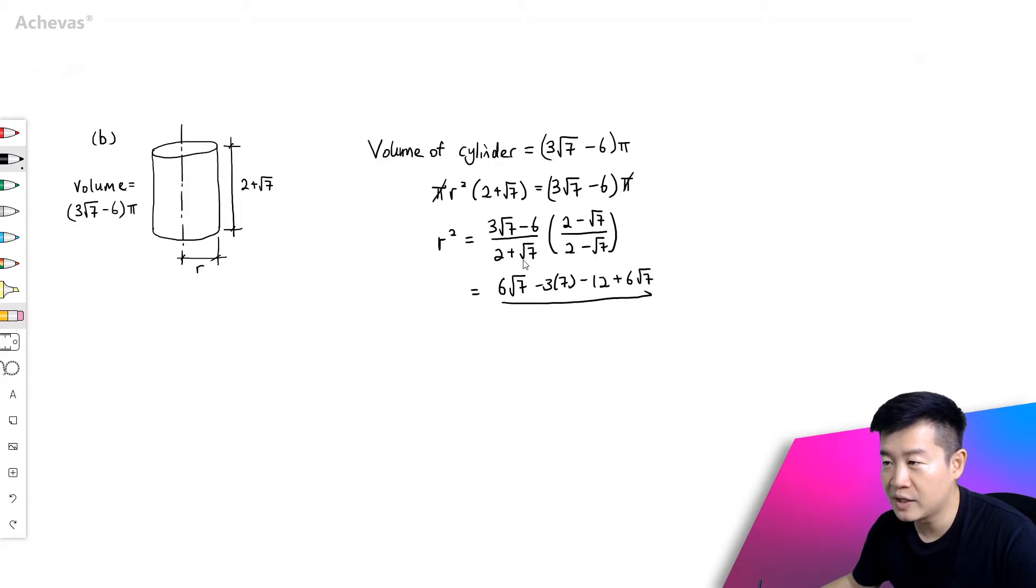And this will be divided by (a + b)(a - b), which will be a² - b².